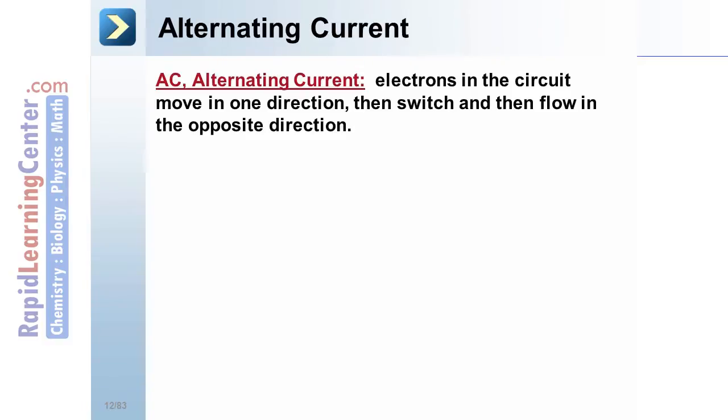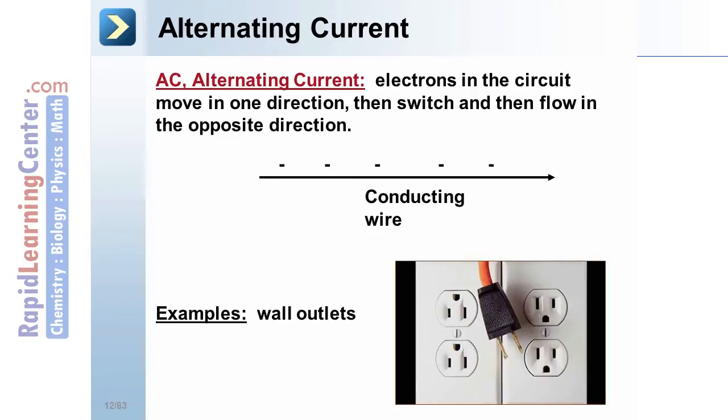Alternating current, or AC. Here, electrons in the circuit move in one direction, but then switch and flow in the opposite direction. Here's our conducting wire again. Note these electrons in alternating current. Examples of AC current include regular wall outlets, like are found in your home.